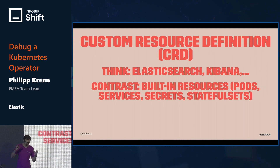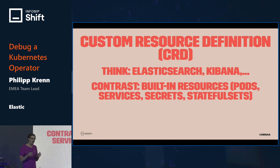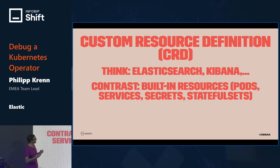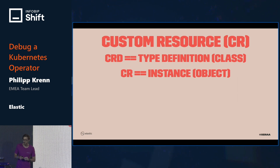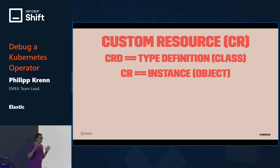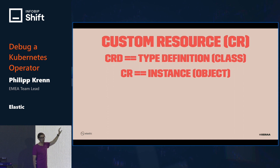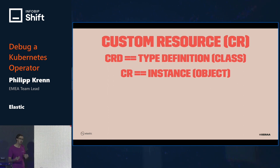The way Kubernetes operators work: you have a so-called custom resource definition or CRD. This is basically saying what you want to have. The CRD puts you on a higher level, so you can think in terms of Elasticsearch or Kibana services rather than pods, services, secrets, stateful sets, and all the other Kubernetes concepts. Some people are pedantic and note the custom resource is the instance and the custom resource definition is the type definition or class. The custom resource definition is like the class, and the custom resource is what you're actually running in production.